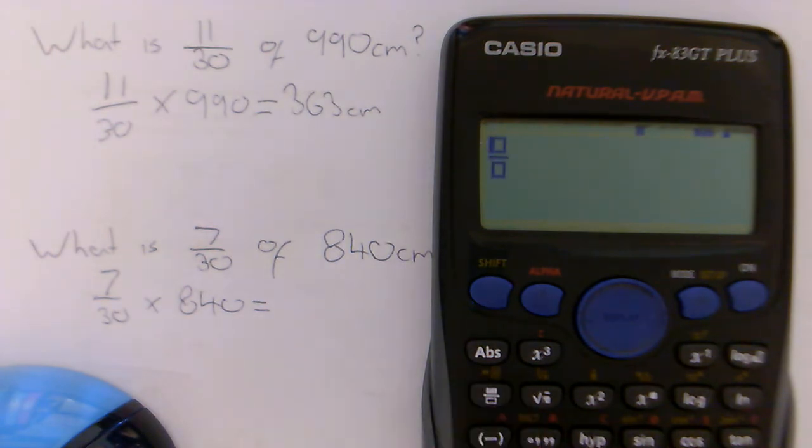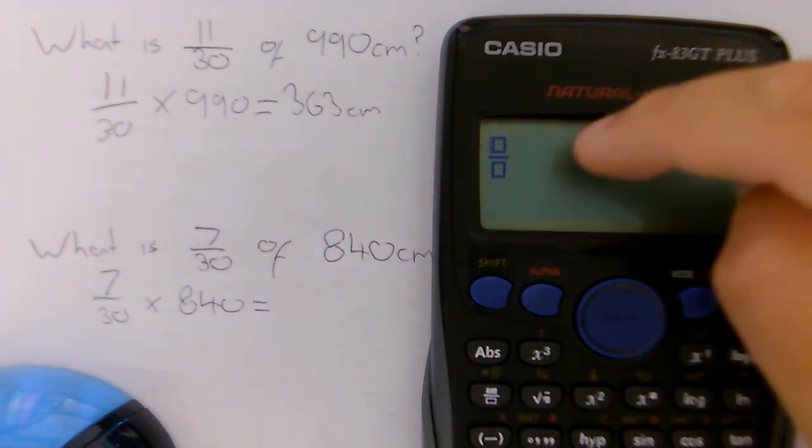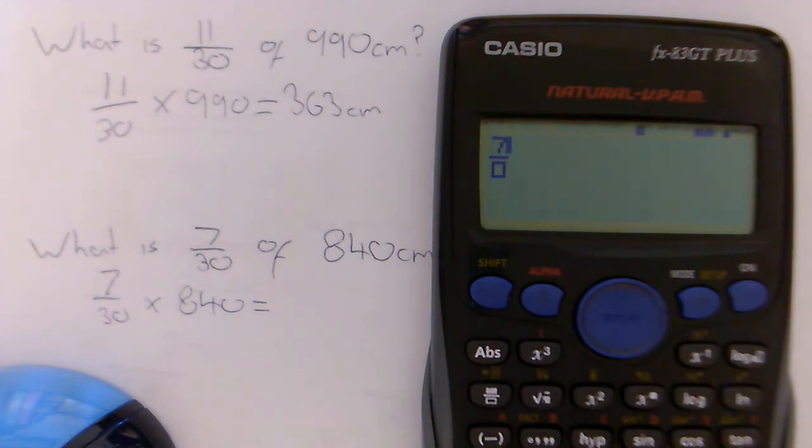Again press this fraction button. Gives us our empty fraction. We're typing in the numerator now so we type in our 7. Press the down key to give us our denominator. Then we type in 30.